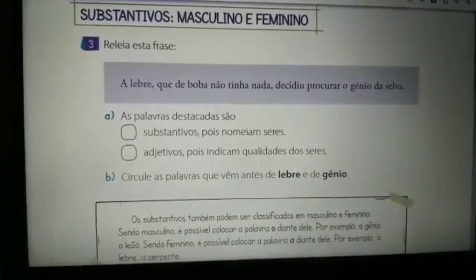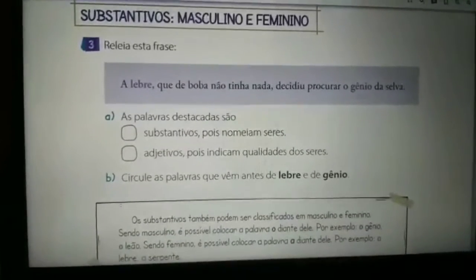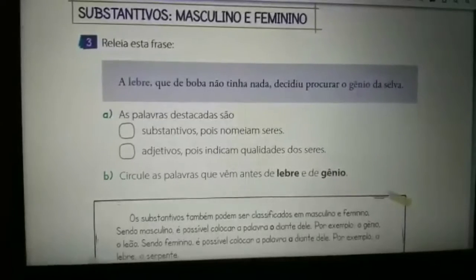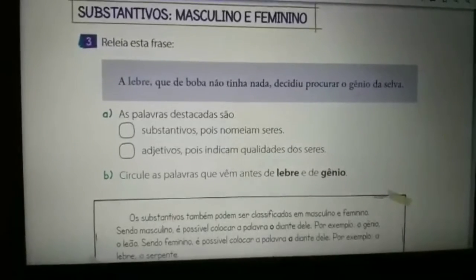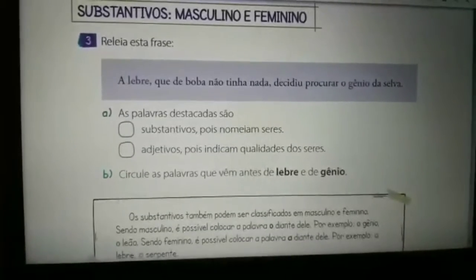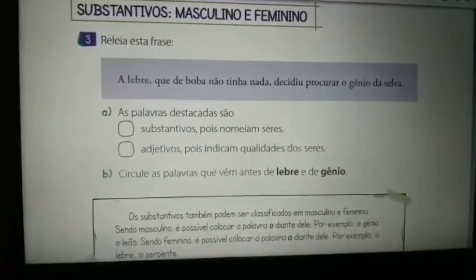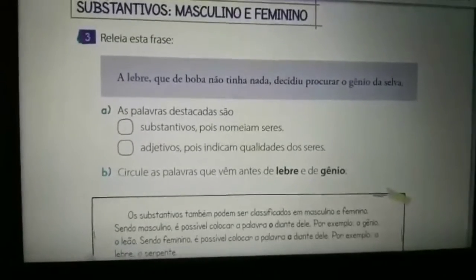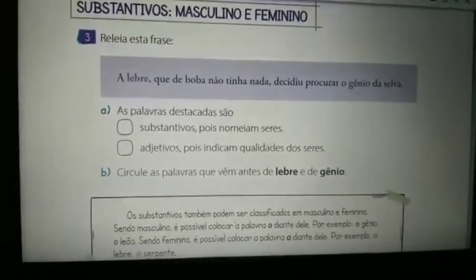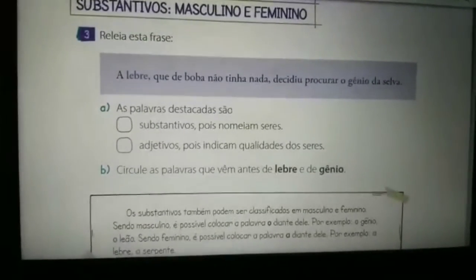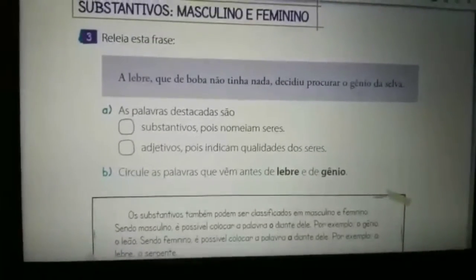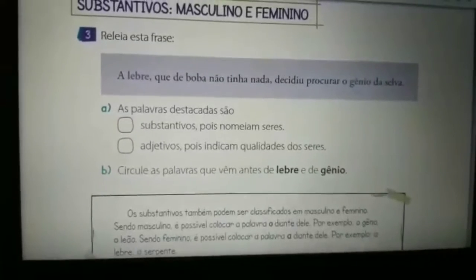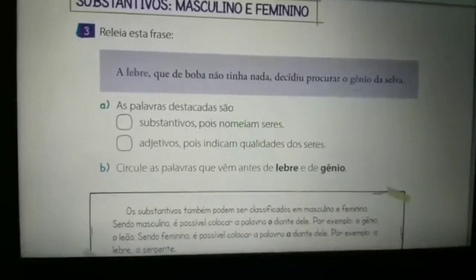Questão de número 3. Releia esta frase: 'A lebre, que de boba não tinha nada, decidiu procurar o gênio da seu.' As palavras destacadas são... então, a primeira coisa nós vamos analisar: quais são as palavras destacadas? Nós temos aí lebre e gênio.